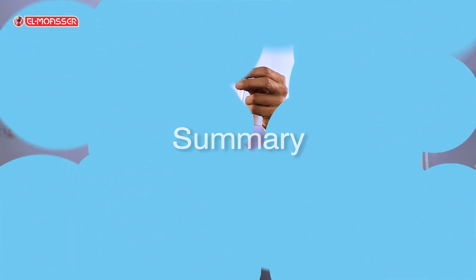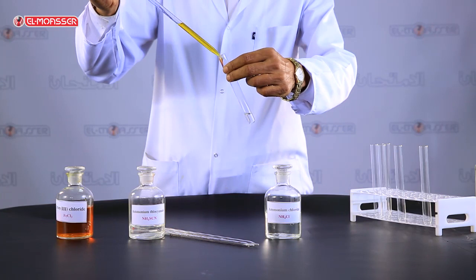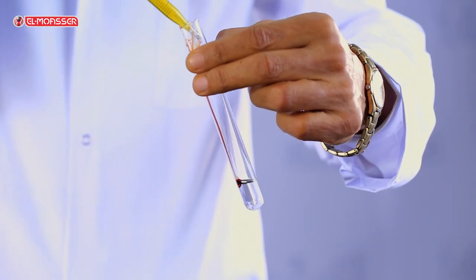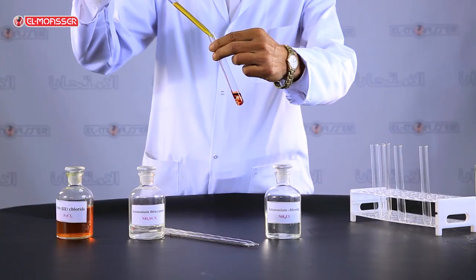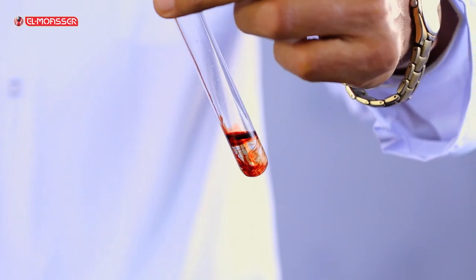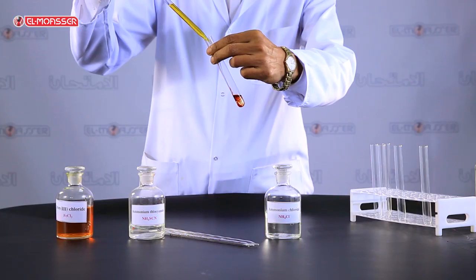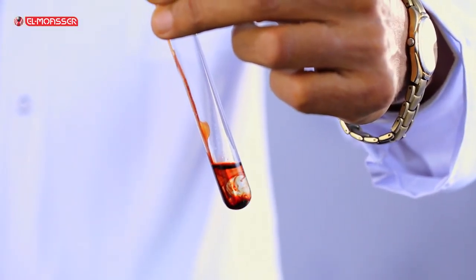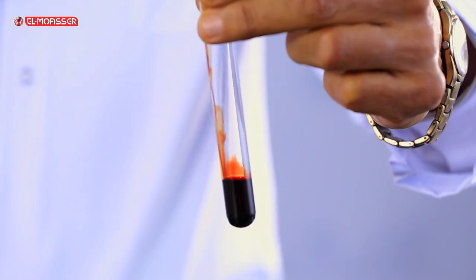Summary: On adding pale yellow iron(III) chloride solution to colorless ammonium thiocyanate solution, the reaction activates in the forward direction, which is detected by the solution changing to blood red — the color of iron(III) thiocyanate. The intensity of the red color increases by increasing the concentration of iron(III) chloride solution.